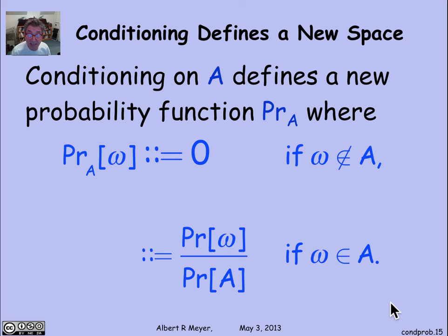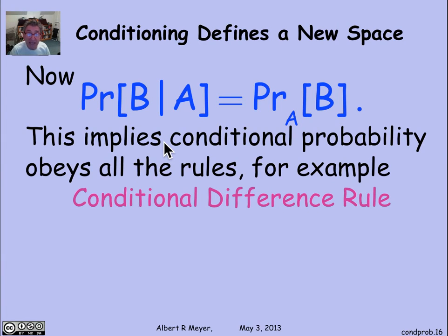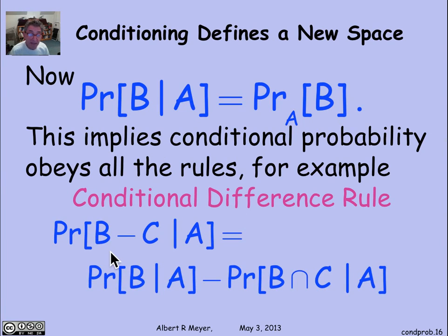will satisfy all of the rules of probability, because it is a probability measure. So for example, I have the difference rule restated for conditional probabilities. Given that the probability sub A is a probability measure, it satisfies the difference rule, which means when I translate it into a conditional probability statement, I get that the probability of B minus C given A is equal to the probability of B given A minus the probability of B intersection C given A.